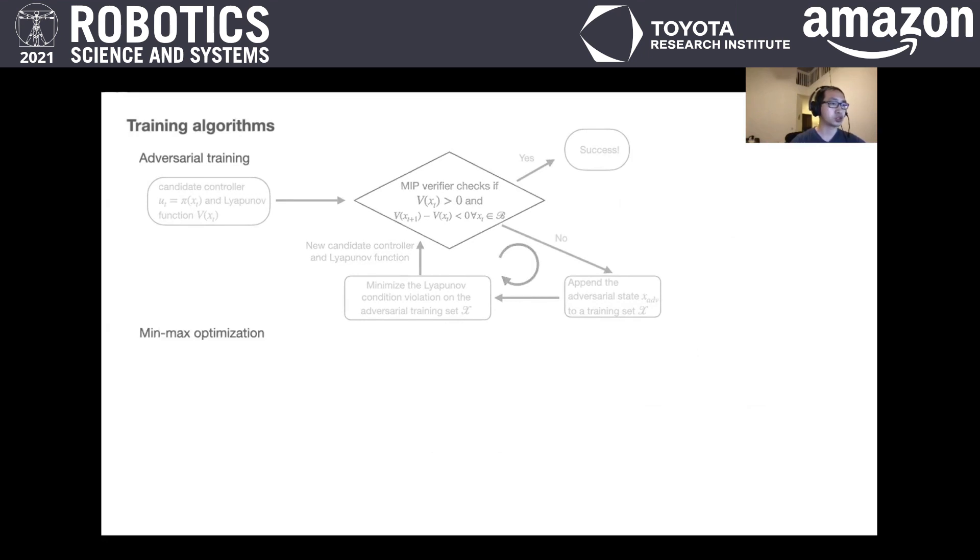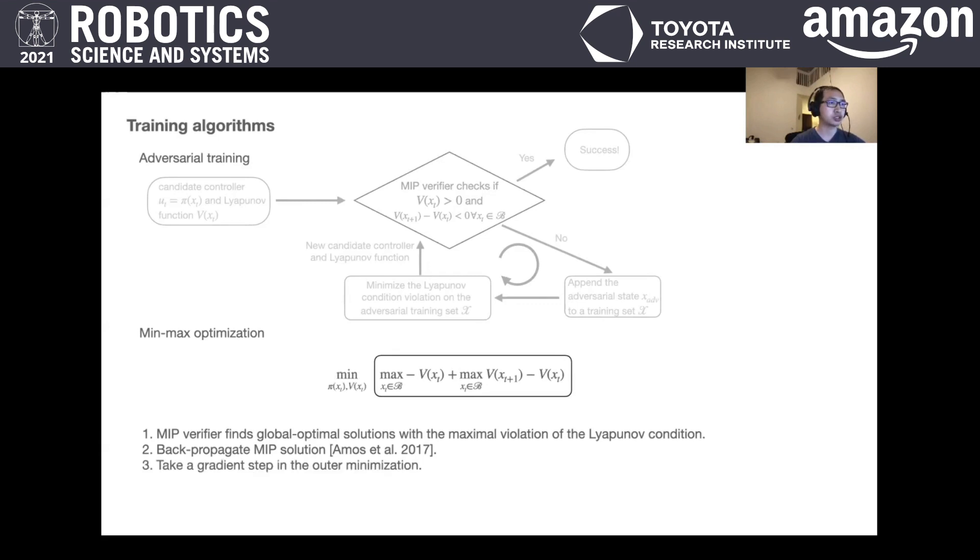Another training approach uses min-max optimization, where we first maximize the Lyapunov condition violation over the state. After the MIP verifier finds the global optimal solution, we then back-propagate the MIP solution to find its gradient and take a gradient step in the minimization problem to update the controller and Lyapunov Function networks. We continue this iterative process until convergence.